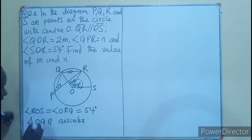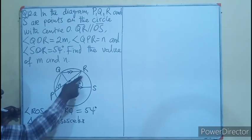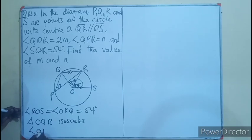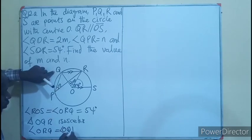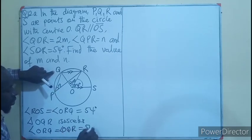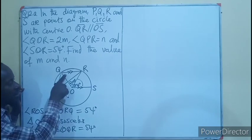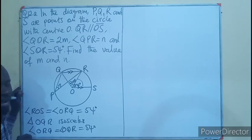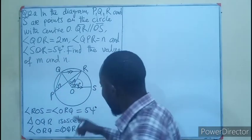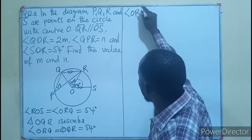I can say angle ORQ equals angle OQR, which is 54 degrees. Now we can see that these angles combine to form a triangle, so I'll add the angles.